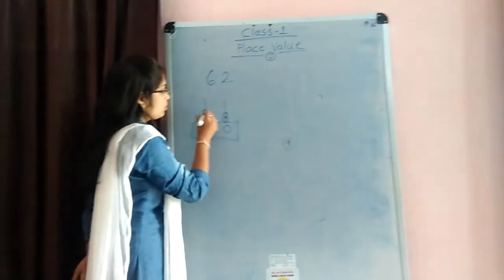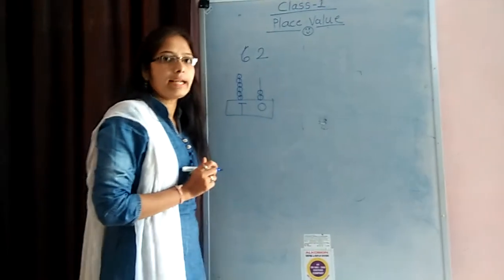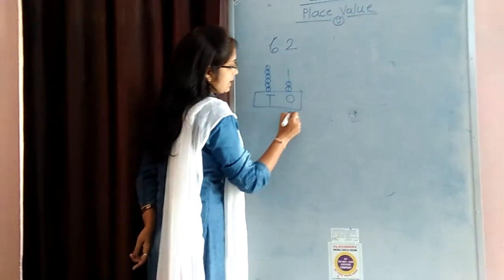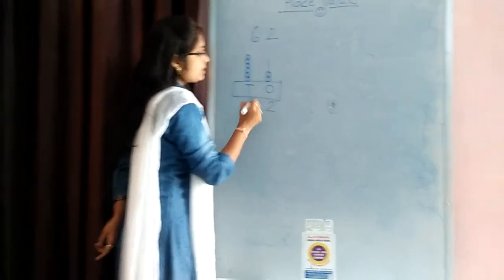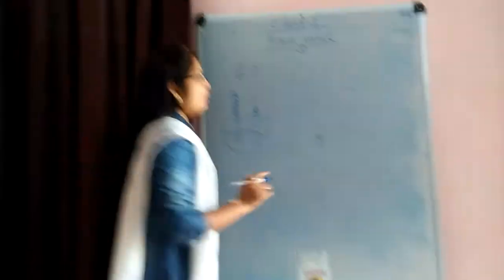1, 2, 3, 4, 5, 6. Understand? So, in 1s place, there is a 2 bits. In 10s place, there is a 6 bits. So, ye ho gaye, 62. Do you understand place value?